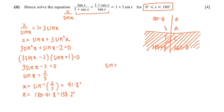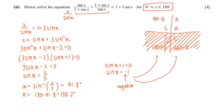Now for sine x plus 1 equals 0, we get sine x equals negative 1. Since there's a negative, x would lie in the tangent and cosine quadrants. But we do not want that because it is more than 180 degrees. So our final answers are x equals 41.8 degrees and x equals 138.2 degrees.